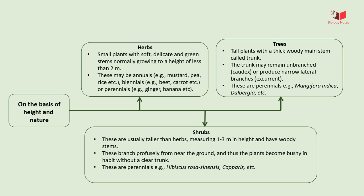The third is the tree. A tree is a perennial plant with an elongated, thick, woody main stem called a trunk. The trunk may remain unbranched (caudex) or produce narrow lateral branches (excurrent). Examples of trees are Mangifera indica, Dalbergia, neem, oak, and many more.